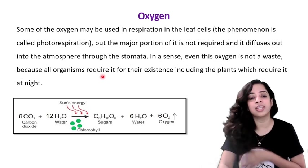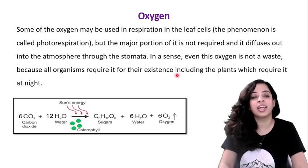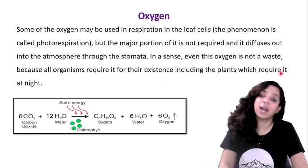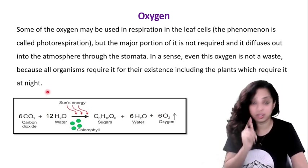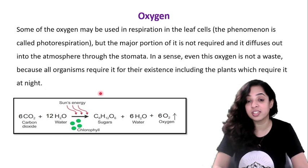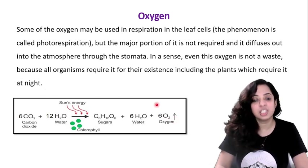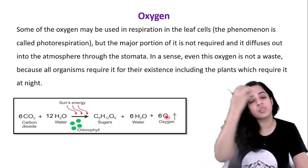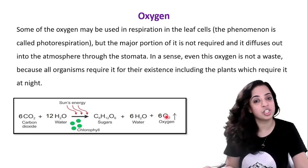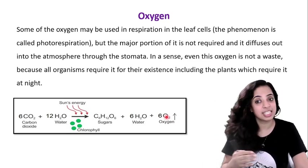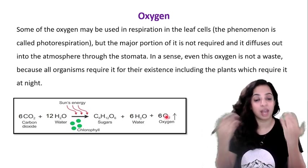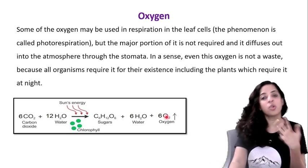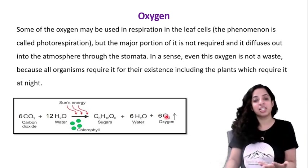This oxygen is not wasted, because all organisms — including human beings — require it for their existence. Plants also take in oxygen at night, as we have already studied. So oxygen produced in photosynthesis is first used in photorespiration in the leaf cells, then the rest is released and used by humans, animals, and plants during the night.